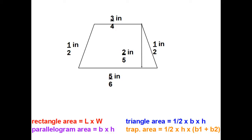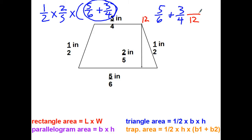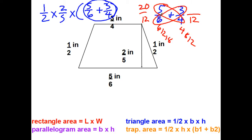For the area, remember: area of a trapezoid is one-half times the height — which is two-fifths — times (base one: five-sixths plus base two: three-fourths). I need to handle the parentheses first. I could cross multiply, but I'll use the LCM instead. We already found that the LCM of 6 and 4 is 12. So: five times 4 is twenty, and six times 3 is eighteen — giving twenty-twelfths plus eighteen-twelfths equals thirty-eight twelfths.